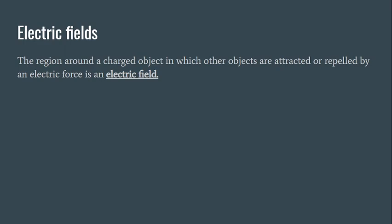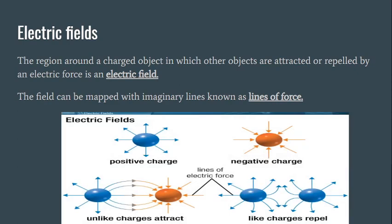If an object is anywhere in that electric field, it is likely to either be attracted to it or repelled based on its charge. Or if it has no charge at all, it will remain neutral. The field can actually be mapped out with imaginary lines known as the lines of force. Even though you could not see these lines of force, they are very useful for making diagrams. We can see here, we have our electric fields on top. The blue represents a positive charge, and the orange represents a negative charge. You can see the lines of force and how they come together when it comes to the unlike charges. So unlike charges attract.